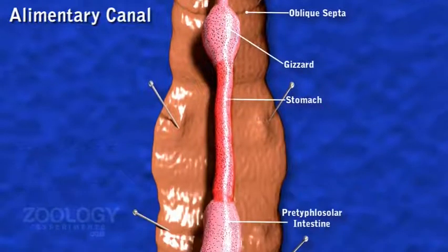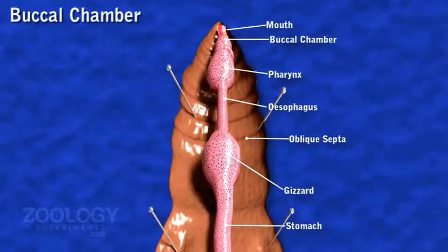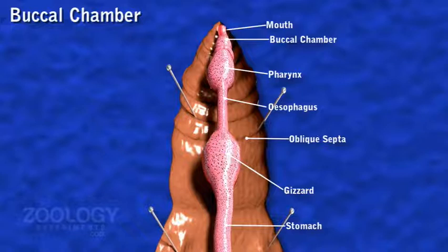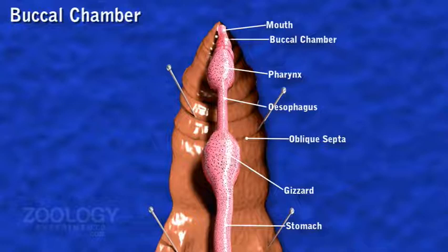Semicircular mouth situated ventral to prostomium at the anterior end of peristomium leads into a shortened narrow protrusible buccal chamber, extending up to the middle of the third segment. Its lining epithelium is thrown into longitudinal folds.